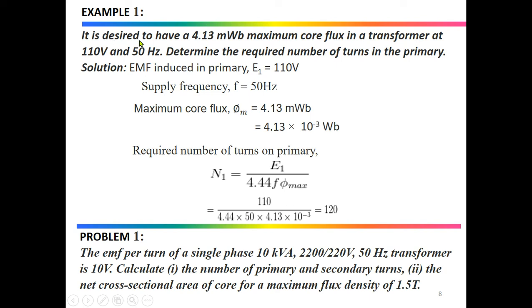To understand this, consider the following problem: it is desired to have a 4.13 mWb maximum core flux in a transformer operating at 110 V and 50 Hz. Determine the required number of turns in the primary. Given: E1 = 110 V, frequency f = 50 Hz, maximum core flux Φm = 4.13 × 10⁻³ Wb. From the EMF equation, N1 = E1 / (4.44 × f × Φm) = 110 / (4.44 × 50 × 4.13 × 10⁻³) = 120 turns.